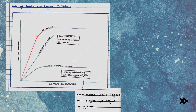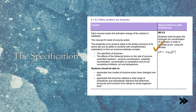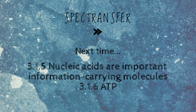When comparing no inhibitors with competitive inhibitors and non-competitive inhibitors: competitive inhibitors will level off at the same rate of reaction as when no inhibitors are used, just requiring a higher substrate concentration to reach this point. With non-competitive inhibitors, increasing substrate concentration has no effect upon the enzyme activity. So that's it — we've covered everything from this part of the specification. Thank you for watching SPECTransfer. Next time we'll be looking at nucleic acids and ATP.